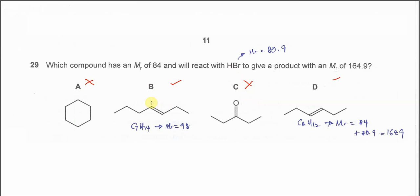Okay so now just B and D. From the skeletal formula, we know that B is C7H14 with MR 98. So from the MR we already know the answer. D is C6H12 with MR 84.